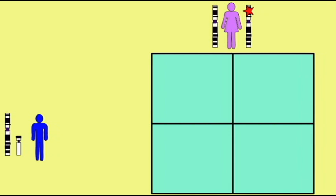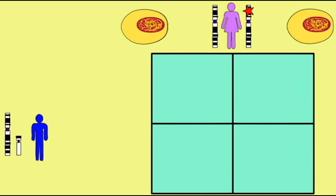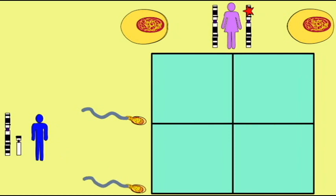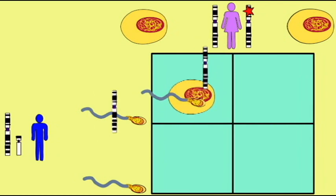If a normal male — a male who does not possess a recessive mutation on his X chromosome — has offspring with a carrier female who has a normal phenotype but carries a recessive mutation, all of the female offspring will be normal. None will be affected with the recessive phenotype, although half will have a recessive mutation on an X chromosome and be carriers.